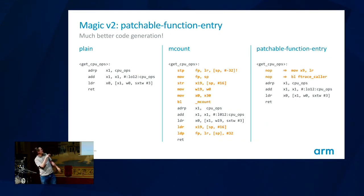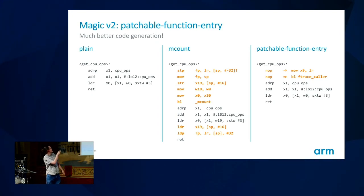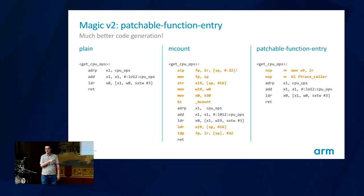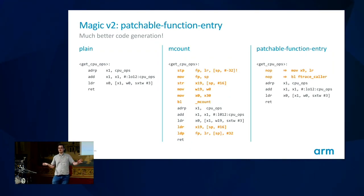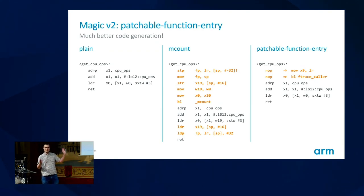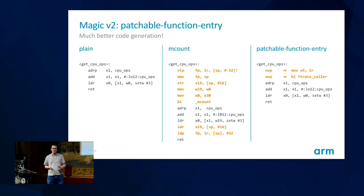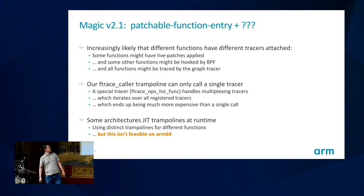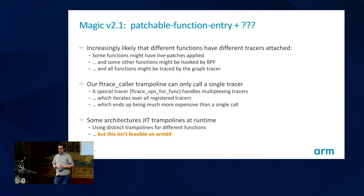This approach makes a big difference. For example, a leaf function like getCPUOps that loads from a per-CPU pointer: with mCount it generates all the work to save link registers to the stack, save function call arguments, call mcount, and undo it on return. With patchable function entries, we just get two NOPs. This is the most extreme case — a leaf function. For non-leaf functions, it's only about two or three extra instructions on average.